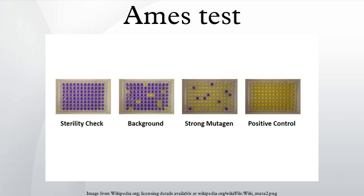Some compounds are quite specific, causing reversions in just one or two strains. The tester strains also carry mutations in the genes responsible for lipopolysaccharide synthesis, making the cell wall of the bacteria more permeable.